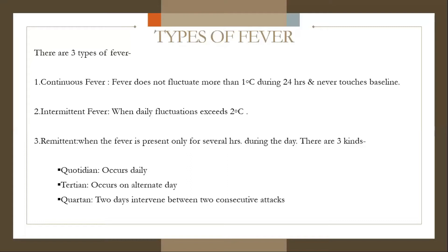There are three types of remittent fever. Quotidian occurs daily, as in collagen disease. Tertian fever occurs on alternate days, as in Plasmodium vivax and Plasmodium ovale malaria. Quartan fever has two days intervening between two consecutive attacks, as in Plasmodium malariae infection.